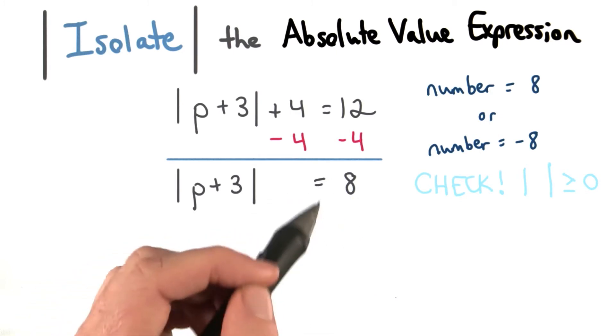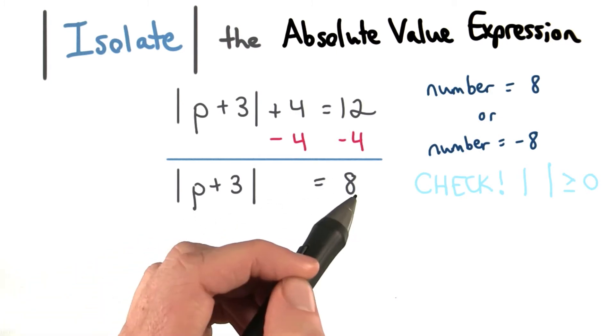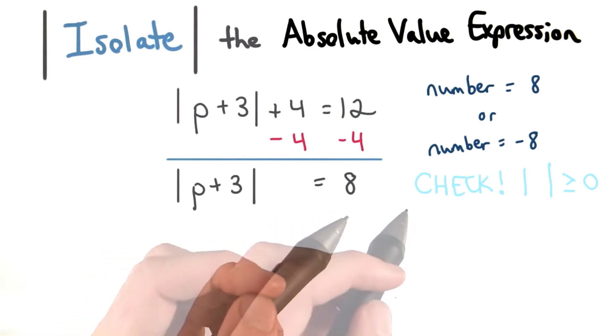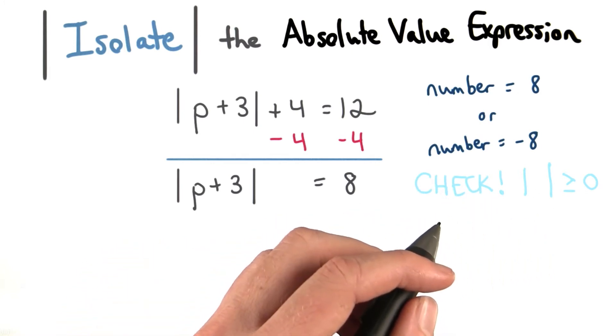So if we had a negative answer on this side, there wouldn't be any number that can make it true. There'd be no solution. This is a difficult concept, and it's one that we'll stumble upon later.